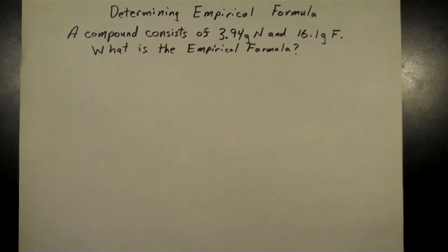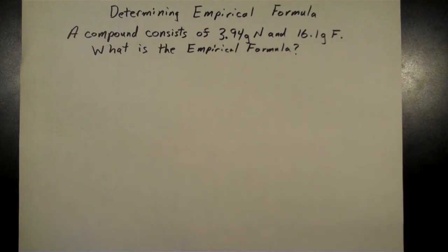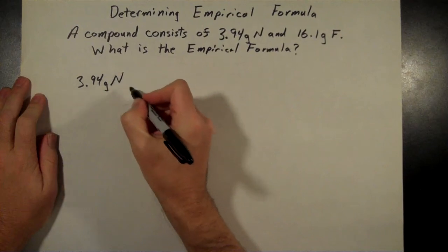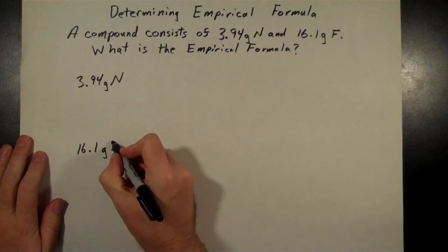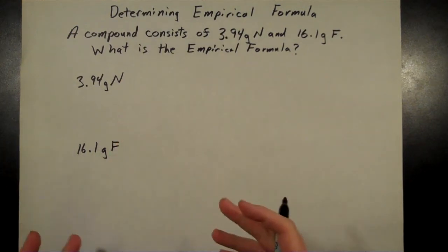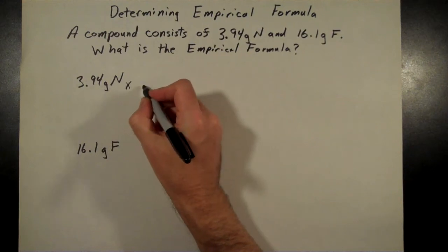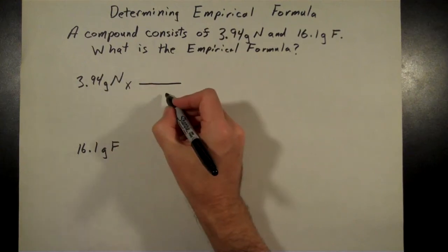I've got a compound. In this case, we're just given masses. A compound consists of 3.94 grams of nitrogen and 16.1 grams of fluorine. What we're going to do is take each of those gram amounts first. Let me rewrite my 3.94 grams of nitrogen. We're going to convert each of these. I'm going to write my other one down here, 16.1 grams of fluorine. We're just going to use just one atom of each for now for the amounts that we're looking at. We're going to convert those amounts into moles.